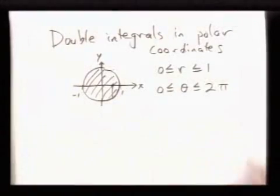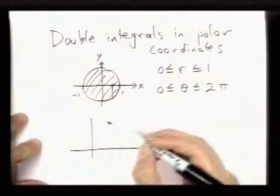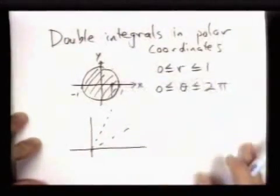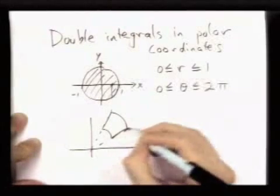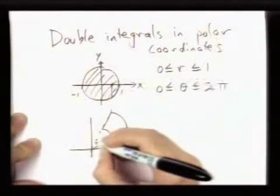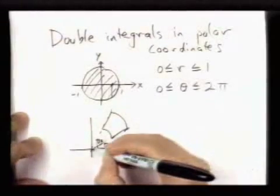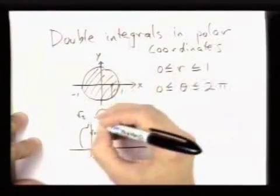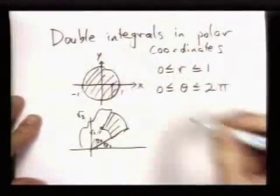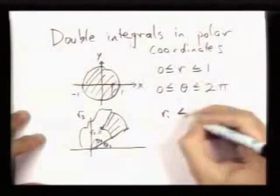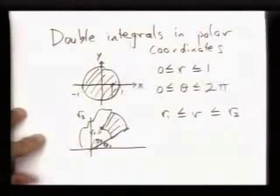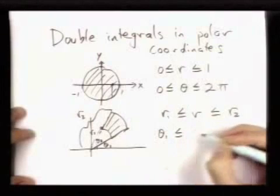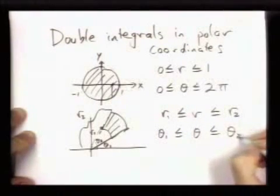Some other regions that are easy to describe with polar coordinates are things that look like this. Say we have a region bounded by these two rays and by two arcs of circles. If I started at theta 1 and went to theta 2, and let's say this radius is r1 and the big radius is r2, a region like this can be described in polar coordinates as all points with polar coordinates r and theta such that r is between r1 and r2, and theta is between theta 1 and theta 2.